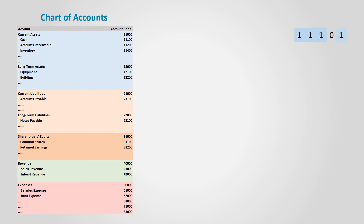The last two digits — zero-one — allow us to add up to 99 cash or bank accounts, ranging from one-one-one-zero-one to one-one-one-nine-nine.